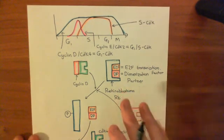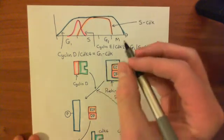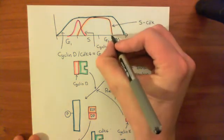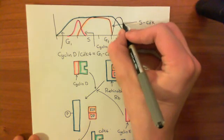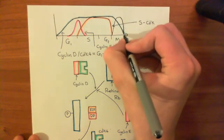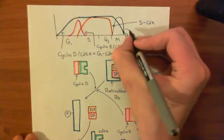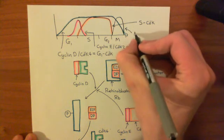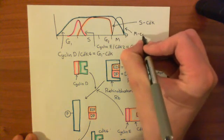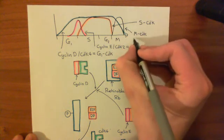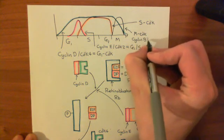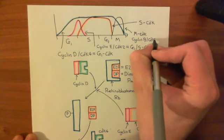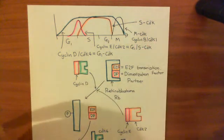There is a final important cyclin-dependent kinase complex, which goes up in the M phase of the cell cycle, like so. And this is known as M-CDK for M phase, and it's also called cyclin-B-CDK1 complex, which tells you exactly what it's made up of: cyclin-B and the CDK1 enzyme.